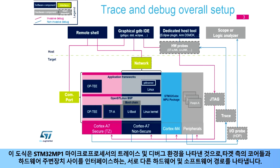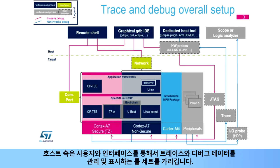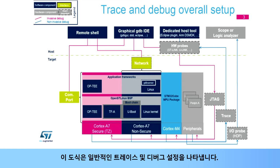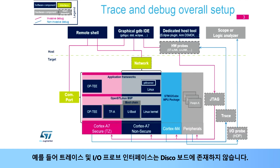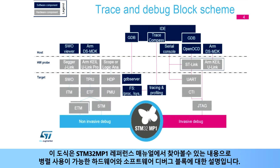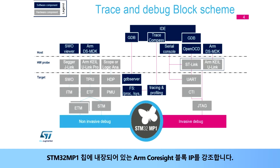This scheme is a representation of the trace and debug environment on STM32MP1 microprocessors, showing the different hardware and software paths which interface with the cores and hardware peripherals on the target side. The host side represents a group of tools to interface with the user and manage or display the trace and debug data. This is a hardware and software block representation which allows a parallel with the detailed debug block diagram available in the STM32MP1 reference manual, highlighting the main ARM CoreSight block IP embedded in the STM32MP1 chip.